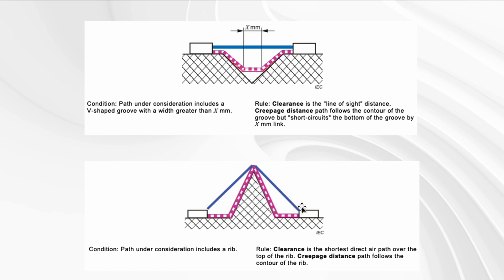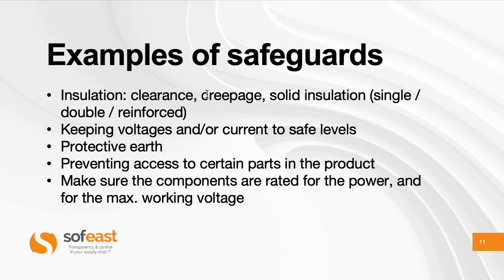Creepage follows the contour of the surface. If it's a V-shaped notch like this, creepage follows the contour of that shape, except when there's a short distance across the notch — then you calculate it across that gap. If it's another shape, it just goes all along the contour. So clearance and creepage are distinct measurements.